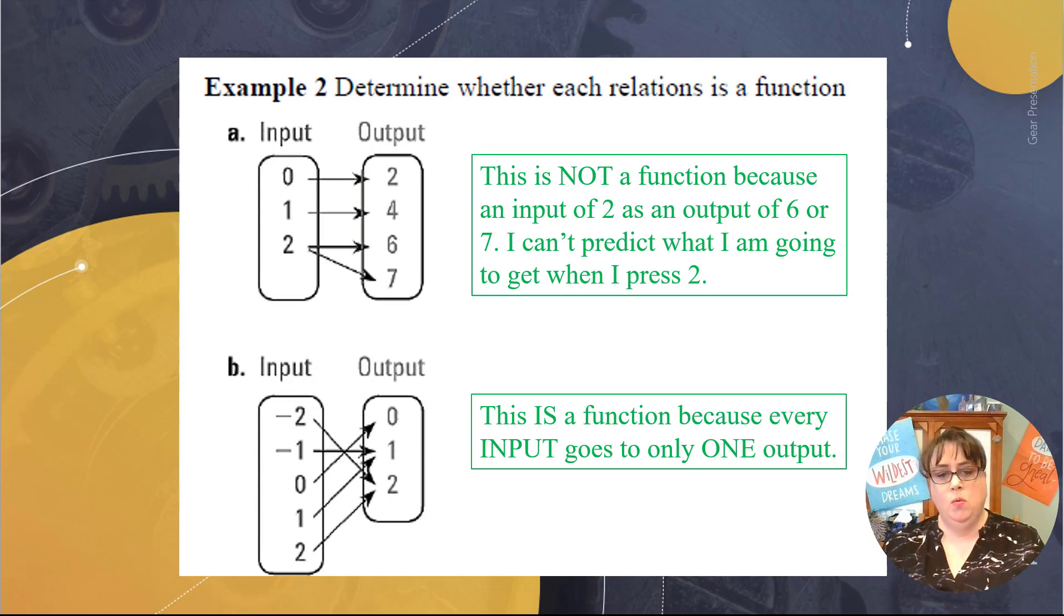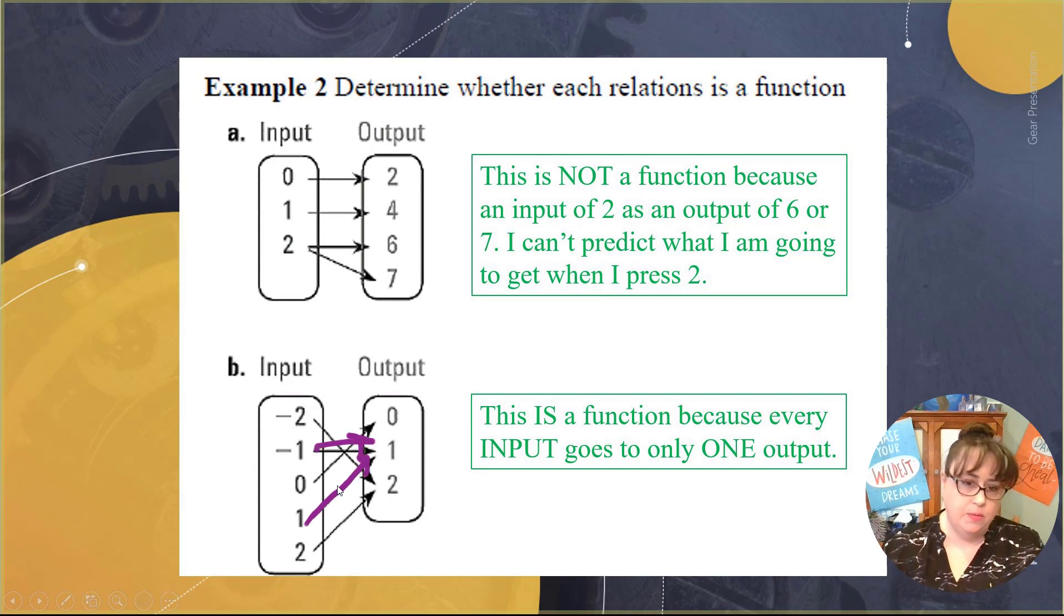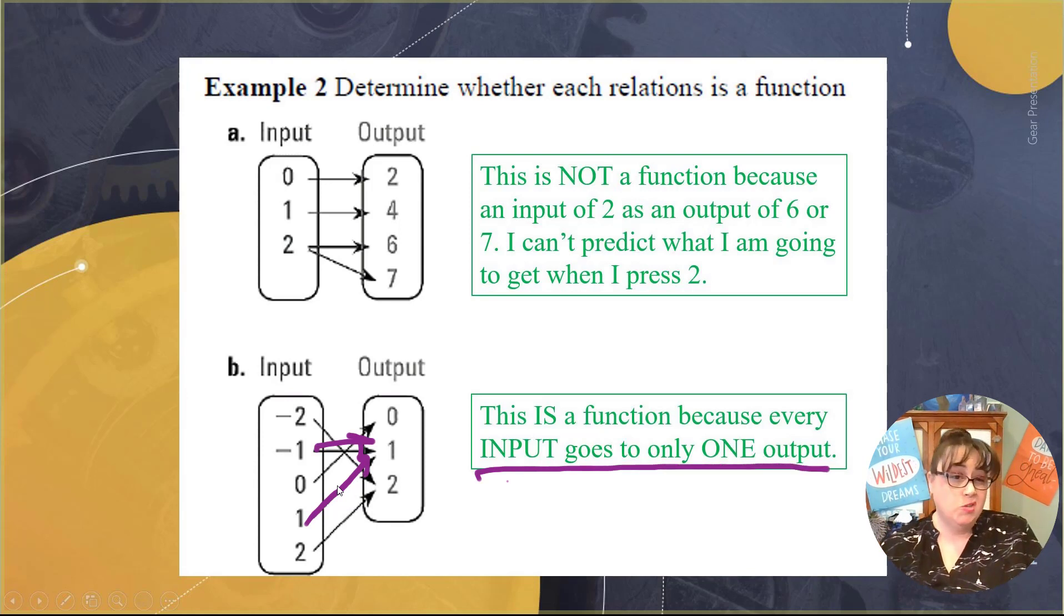Each input goes to only one output. So even though these both went to one, that's okay because each input goes to only one output. So the trick to look for here is see how this had a V coming off of it. You can't have that. See how all of these only have one thing coming off of each of them. That's okay.